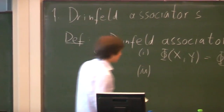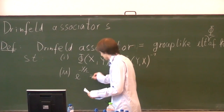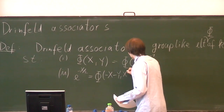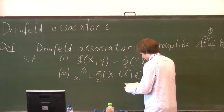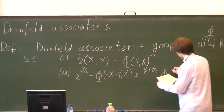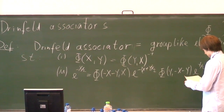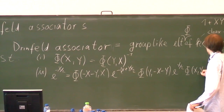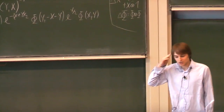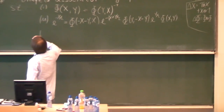The second equation is called the hexagon equation, and it is already a little bit more complicated. I'll just put it on the board. I will not give you an explanation of why this comes about — it is just a multilinear equation. This is called the hexagon.